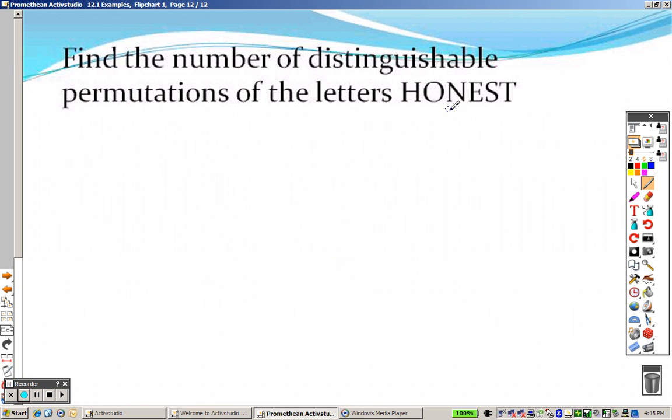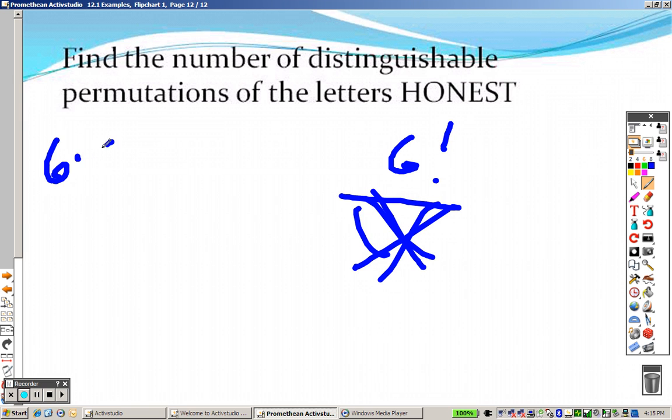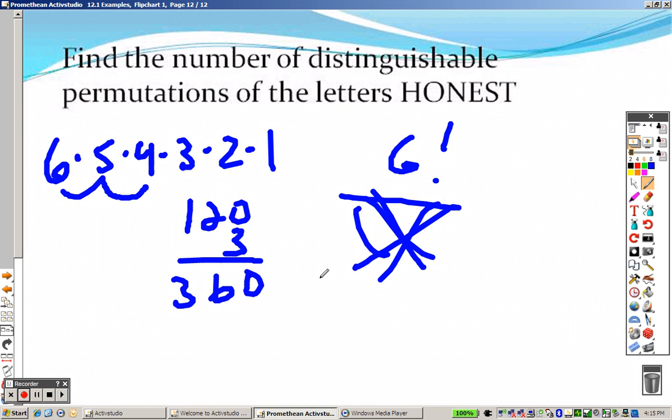Honesty. There's 1, 2, 3, 4, 5, 6 total letters. And there are no letters that are the same. So you don't have to worry about the bottom. So that's like saying 6 times 5 times 4 times 3 times 2 times 1. That's 30. 30 times 4 is 120. 120 times 3 is 360. Times 2 is 720. And there's your answer. 720.